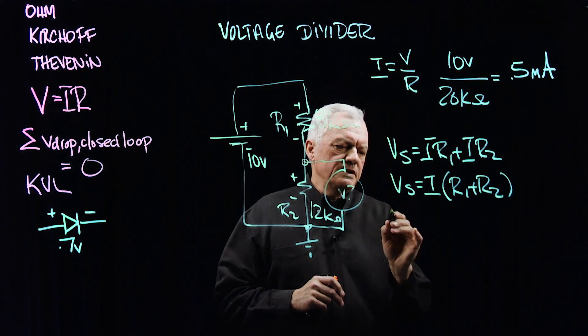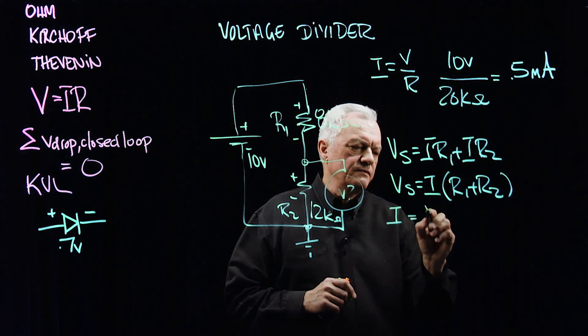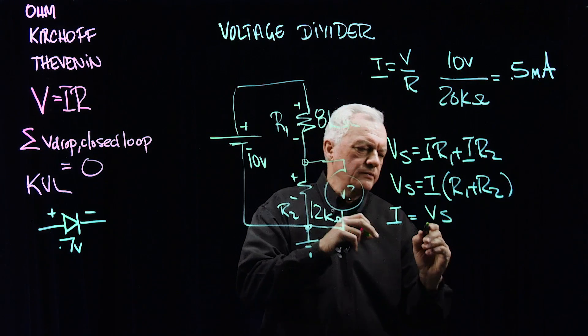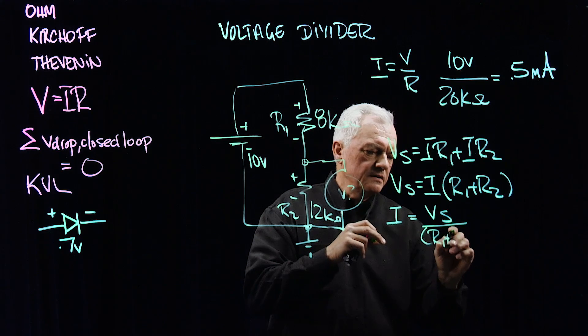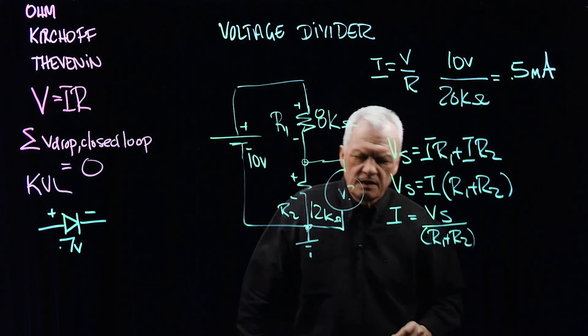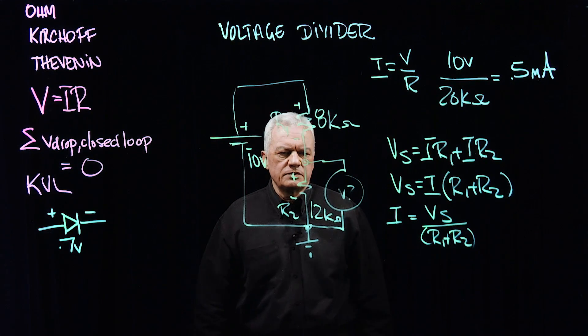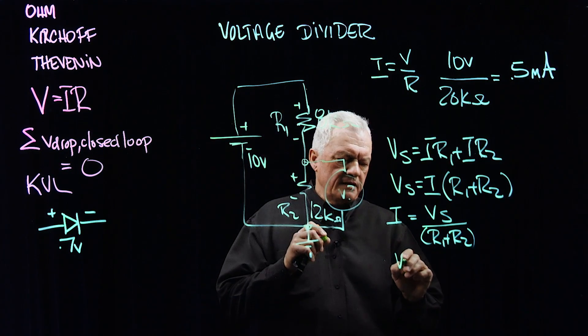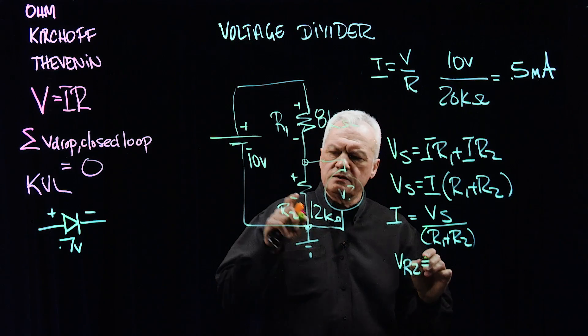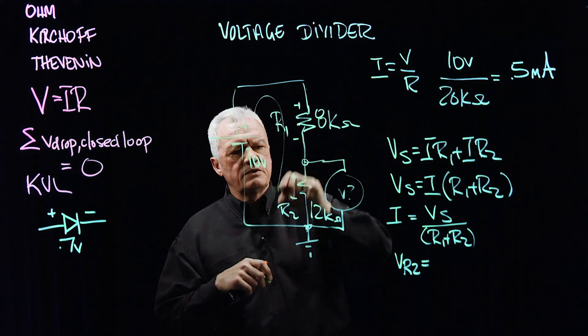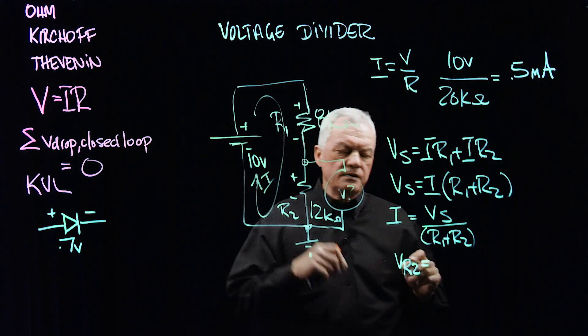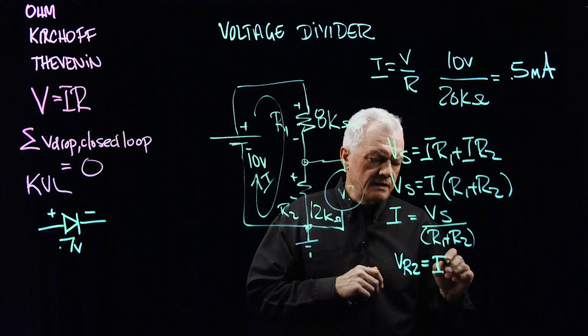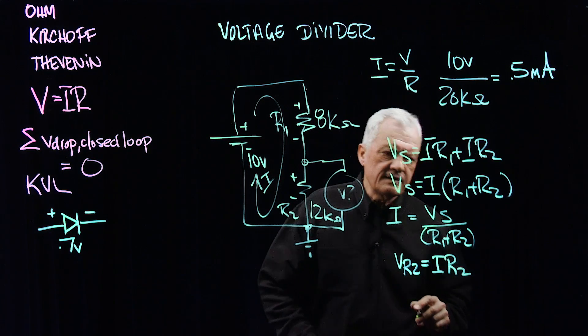In this case here, let me isolate my I, my current. It's equal to V source, we're taking this from multiplying to this side where you were dividing over R1 plus R2. What is this voltage here which we're trying to establish? Basically, the voltage at R2 is equal to the current through here, same current flows through this entire circuit, is the current through R2 times R2.